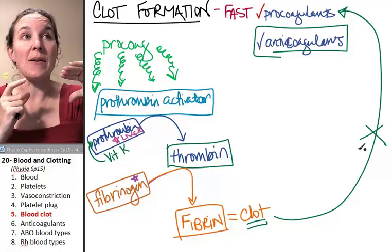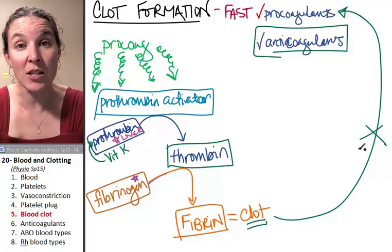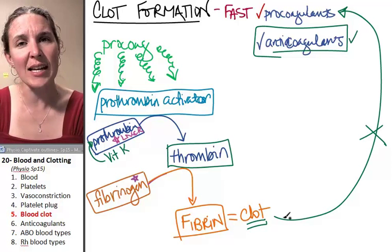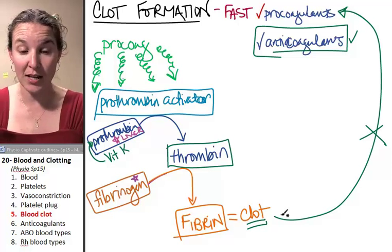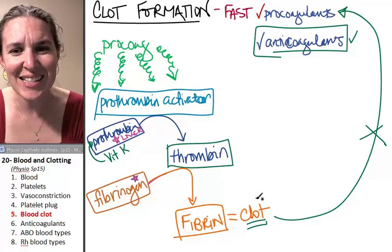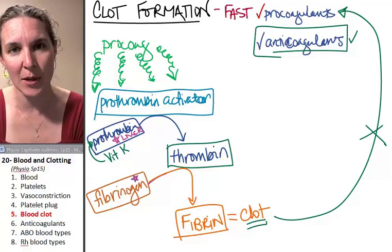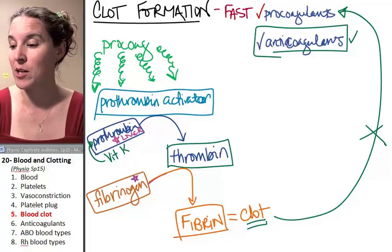So, the healthy tissue surrounding the damage, the healthy tissue goes back to producing its anticoagulants, to producing things that are going to keep your blood vessels happy and open and not clotting, and it's because the clot covers over the damage. Once that damaged stimulus is removed, then the clot formation stops.